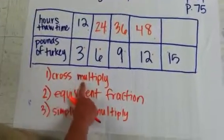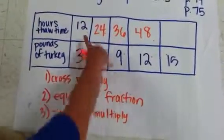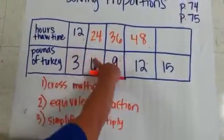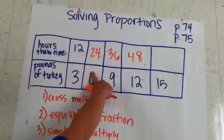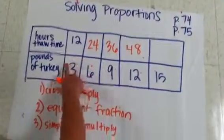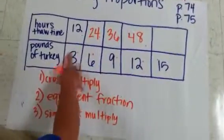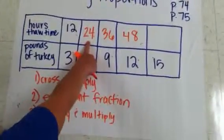Method 1 is cross-multiply. Cross-multiply 12 and 6, divide by 3 and get 24.